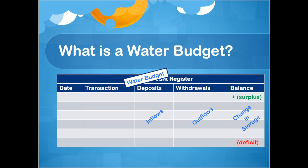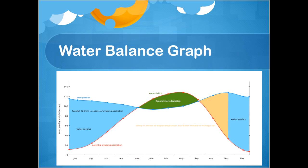Just like our bank book tells us if we have a surplus or deficit, the water budget tells us where we have extra water availability and where we have shortages. We can use this information to create a water balance graph, which helps us to visualize surpluses and deficits.